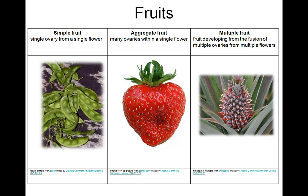Fruits can be categorized by how they form. A simple fruit forms from a single ovary housing ovules that develop into the seeds. Beans are examples of simple fruit — so yes, when you eat the pod of the bean, you are eating a fruit.